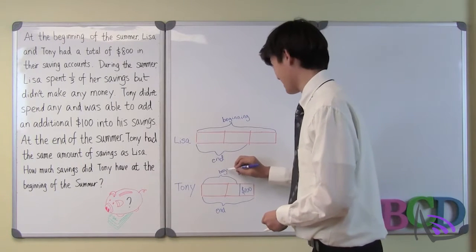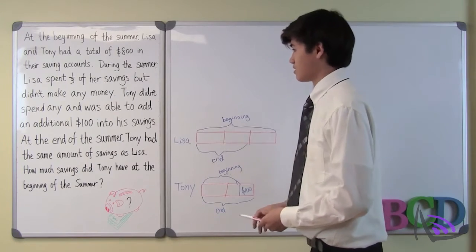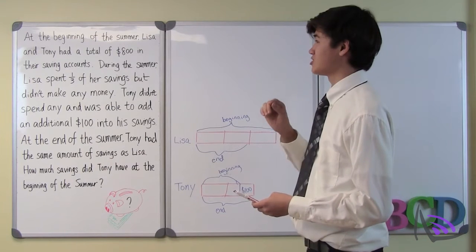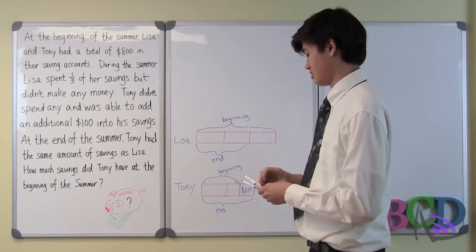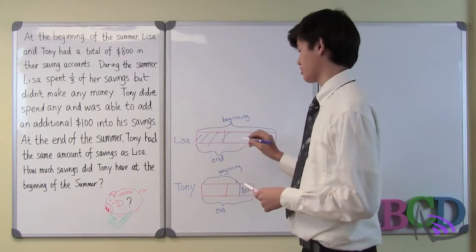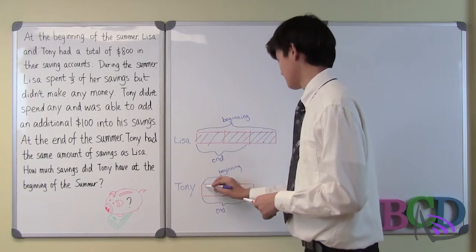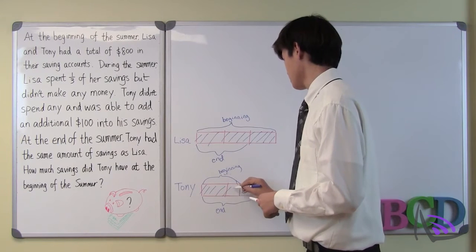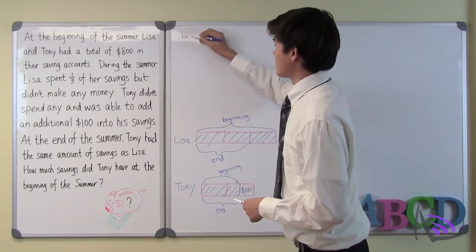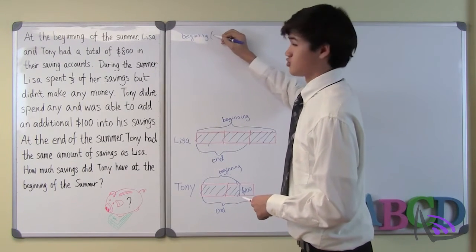The final thing that the question tells us is that at the beginning of the summer, Lisa and Tony had a total of $800. We can represent that using stripes just to make it look more clear for you. At the beginning of the summer, or the striped part.